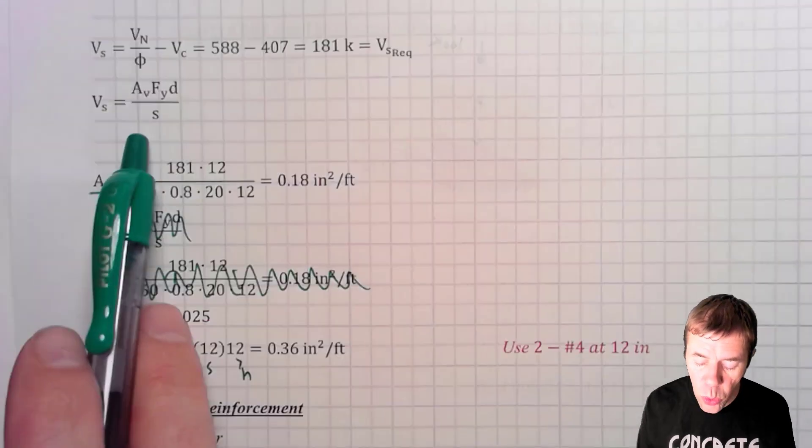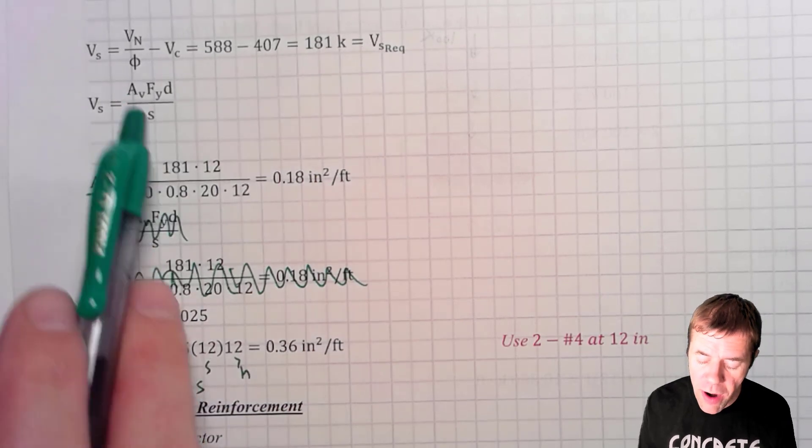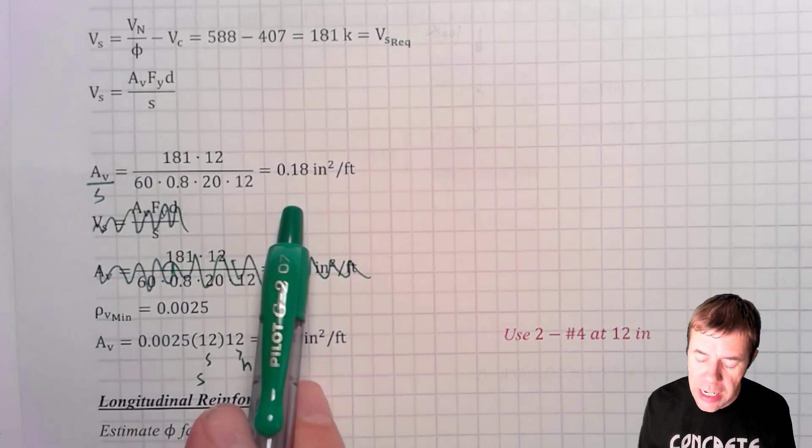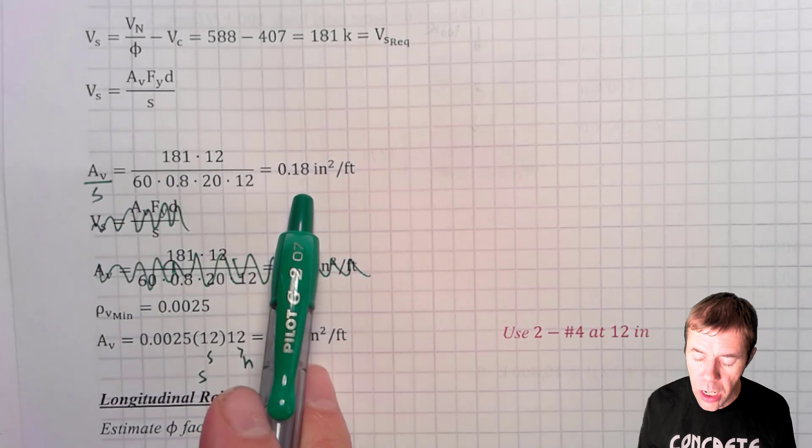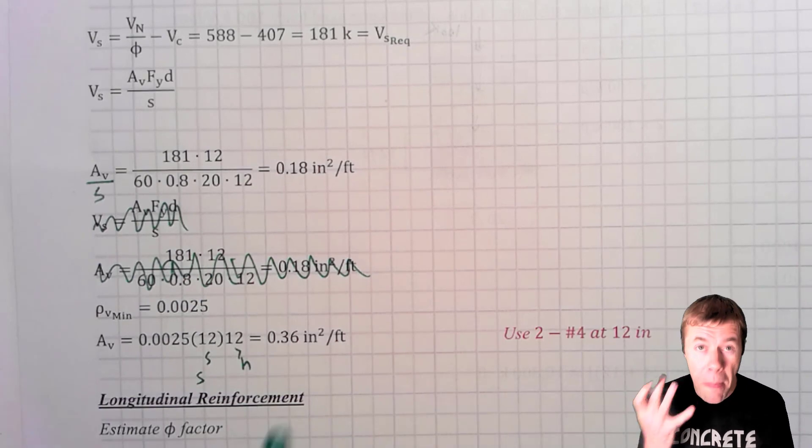Now I can get that by this equation here. Now I'm going to solve for Av over s. So I'm going to move everything around here and figure out that I need 0.18 inches squared per foot. Now that is what I need for my shear capacity.